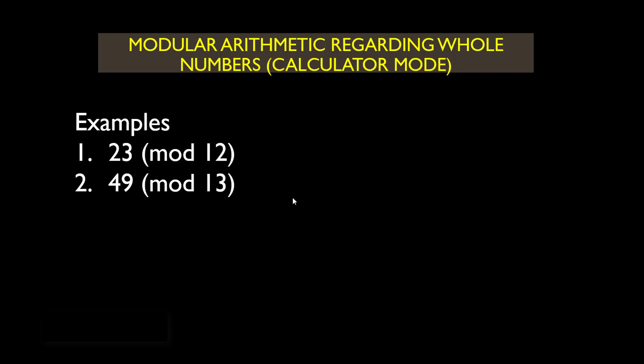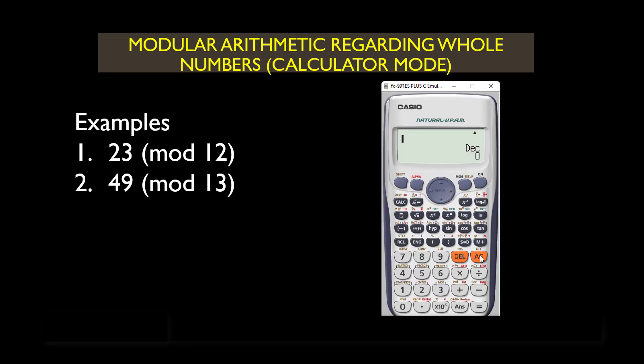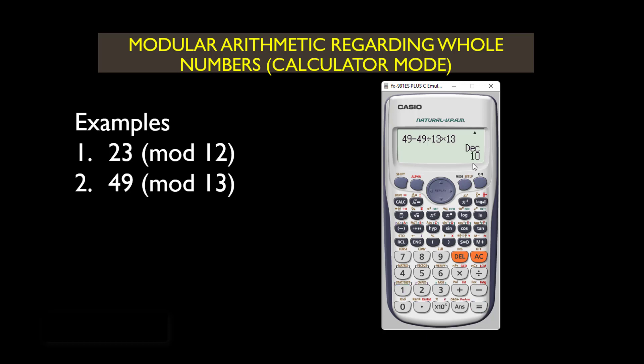Next, 49 mod 13. Press the AC key to clear, then type 49 minus 49 divided by 13 times 13, and press equals. The result is 10, so 49 mod 13 is simply equal to 10. When you divide 49 by 13 you get 3 remainder 10.